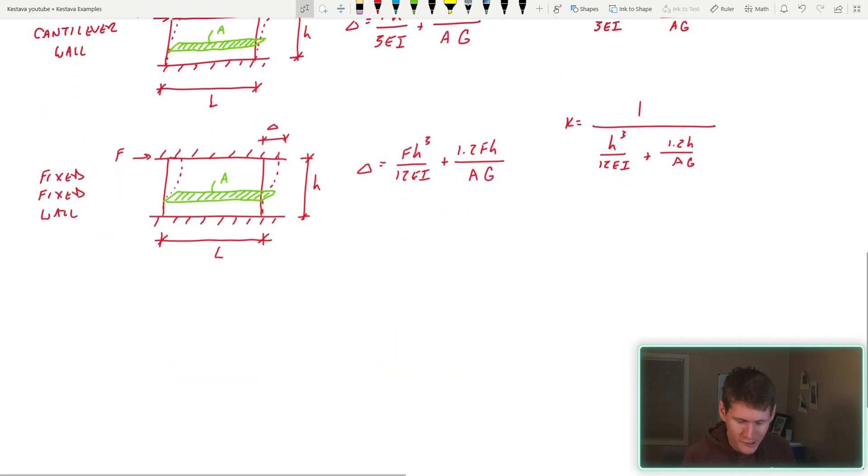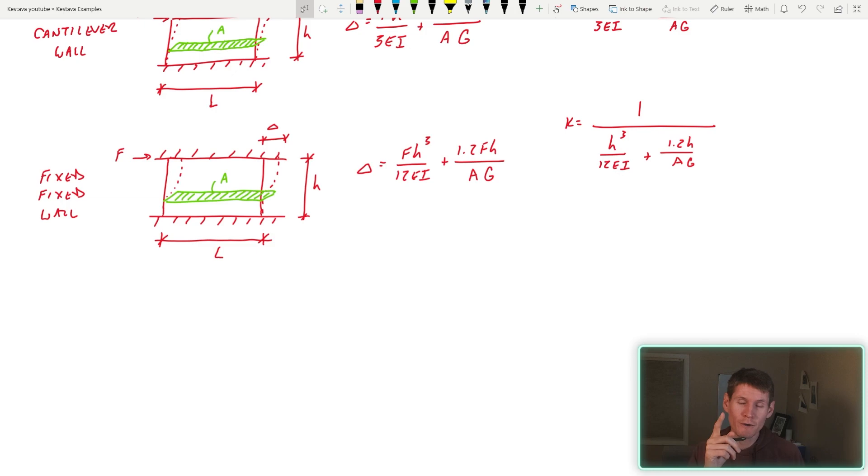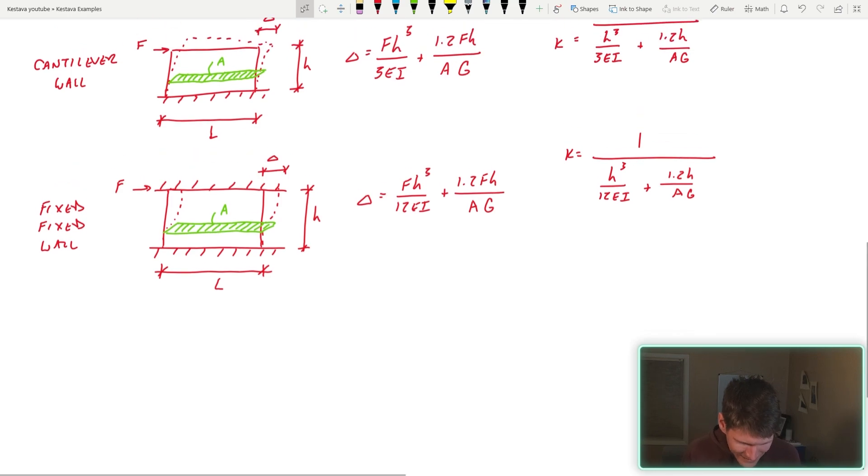And lastly, we have fixed fixed walls, at least for today. I have a few other systems, but let's finish up here. Fixed fixed wall is the same exact thing as a cantilevered wall, and the equations are exactly the same, except you might see similarity here. The three is replaced with a 12, but everything else is the same, and then you inverse this displacement equation to get your stiffness of your system.